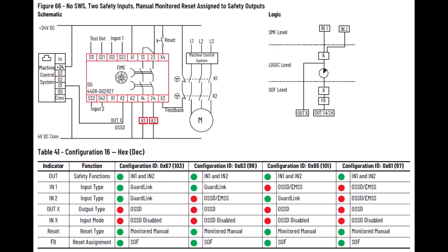You can confirm the operation by looking at the configuration examples in the user manual. This is in configuration 16 and has a value of 63 hex, which is 99 decimal. Looking at the logic, you can see that the out X turns on when both in one and in two are on. And you see that the safety outputs require both the feedback and reset signals to turn on and also applies the time delay when turning off.